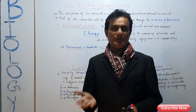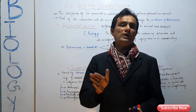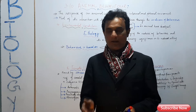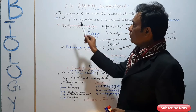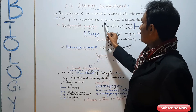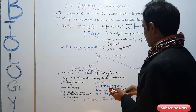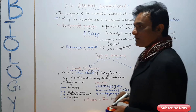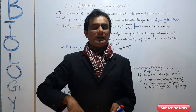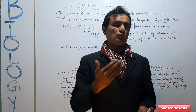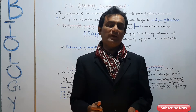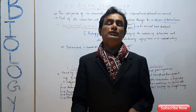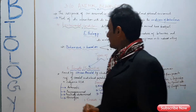Animal behavior depends on the environment — it can be internal. Most of an animal's interaction with its environment takes place through the medium of behavior. The place where the animal lives, almost all its activity happens there, which is called the medium of behavior.